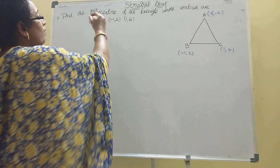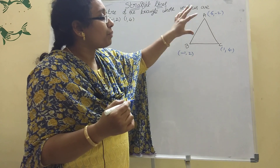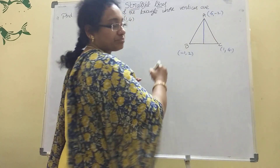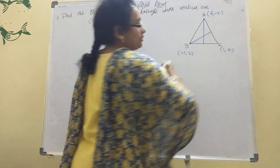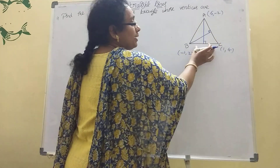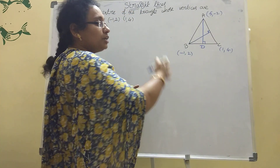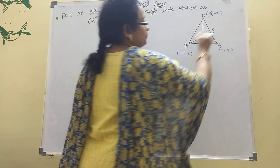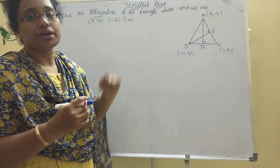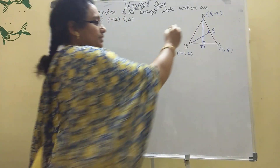What is the orthocenter? The orthocenter means the point of concurrence of altitudes. Here, AD is an altitude of BC, and BE is an altitude of AC. The altitudes are perpendicular. The point of concurrence of altitudes is called the orthocenter.